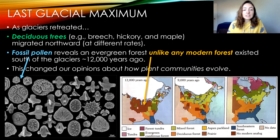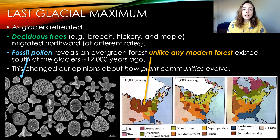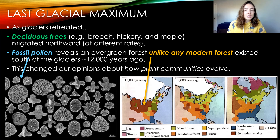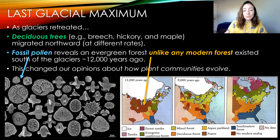Migrating birds aren't the only species that this glacial retreat heavily affected. We have evidence from fossils, especially fossil pollen, that reveals certain types of trees like deciduous trees migrated northward as the glaciers retreated. We used to think that similar plants and forests migrated together, evolved together, and did everything together because they somewhat rely on each other. But what actually happened is that these trees migrated at different rates.